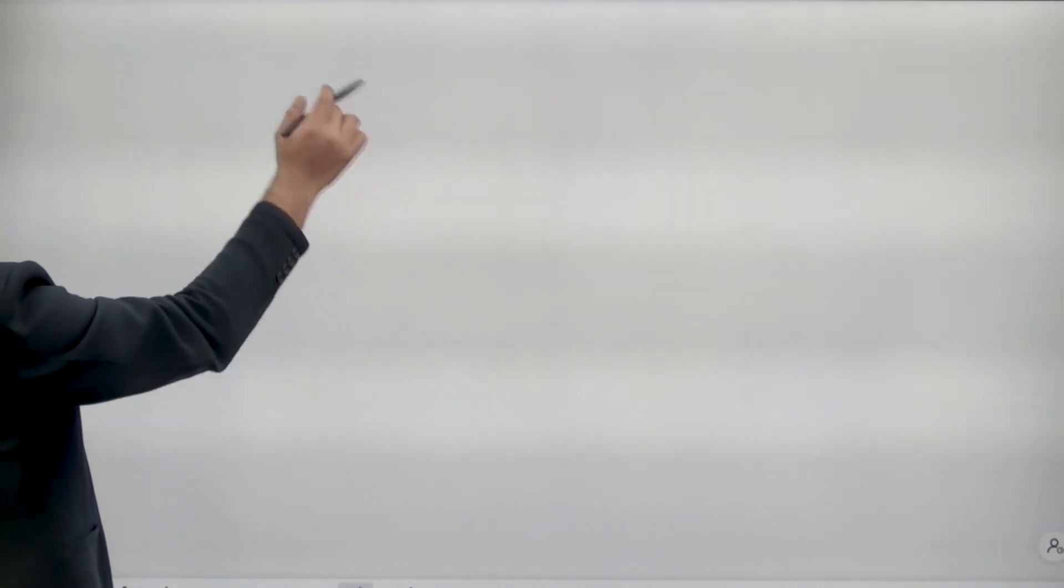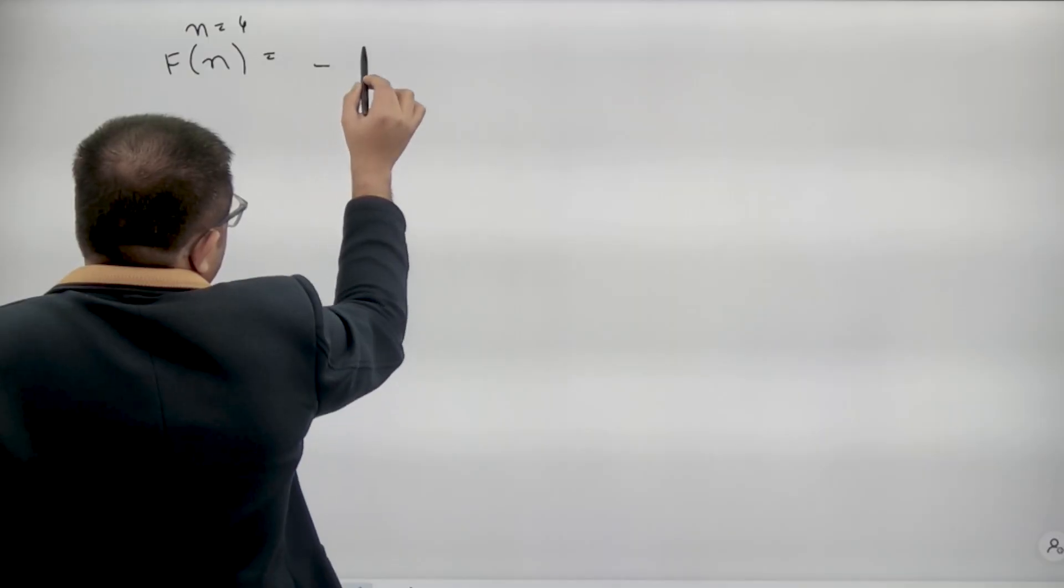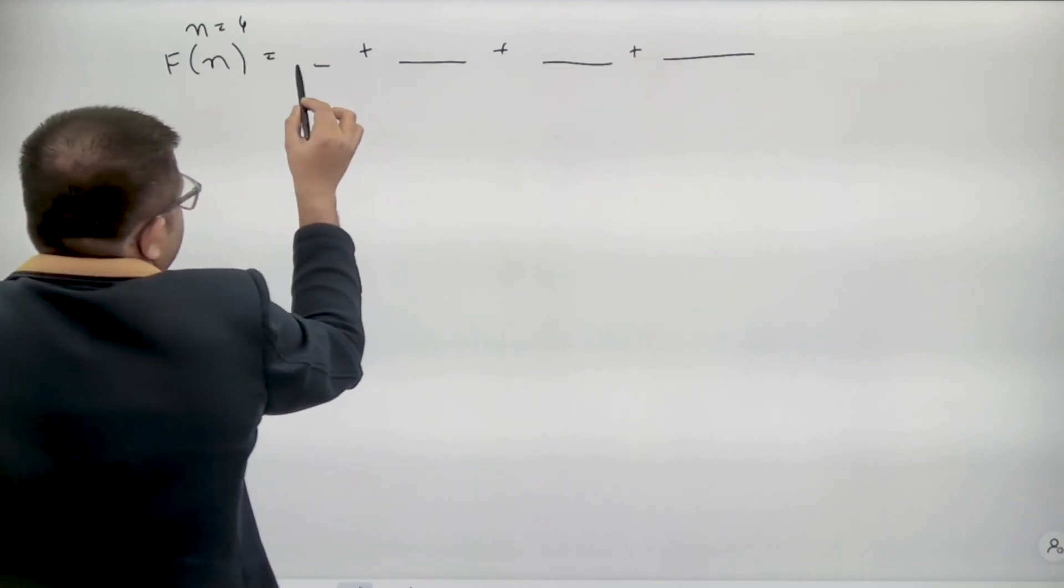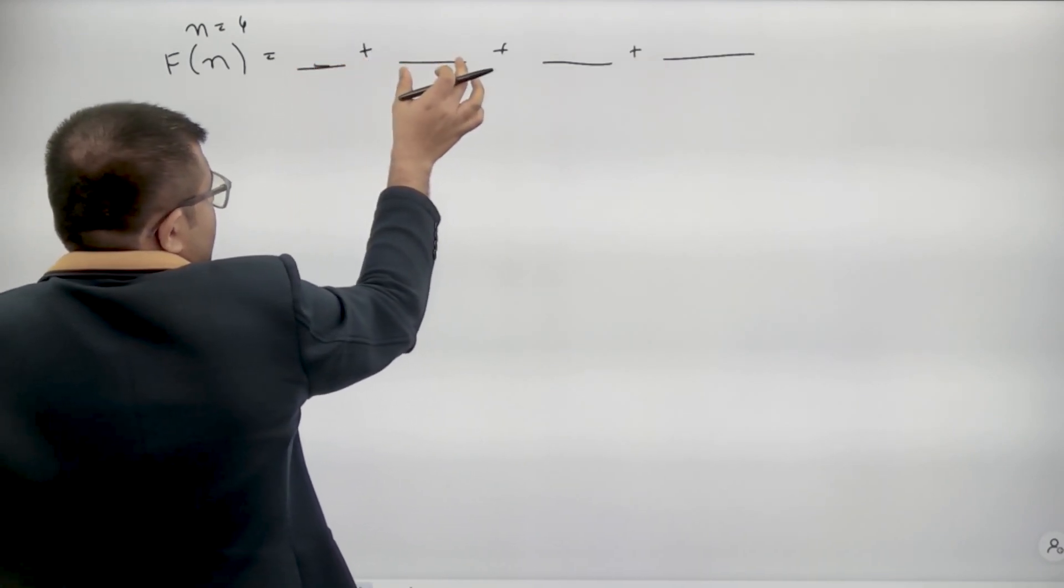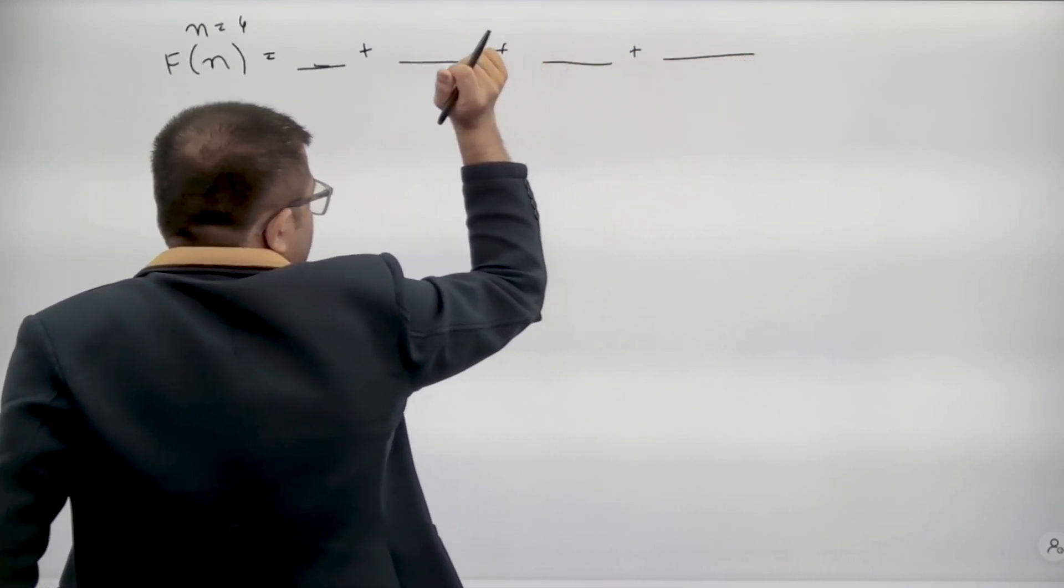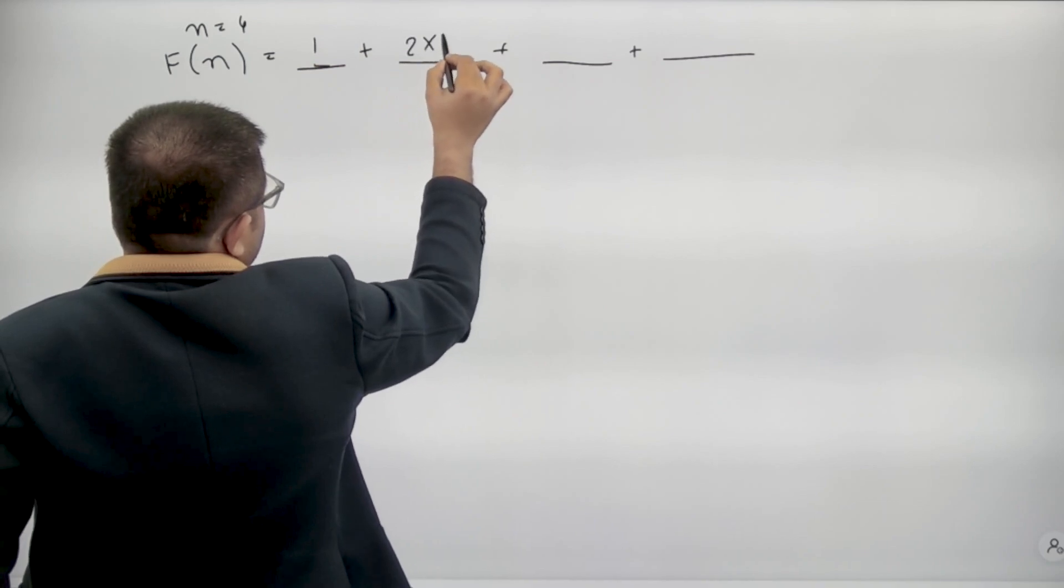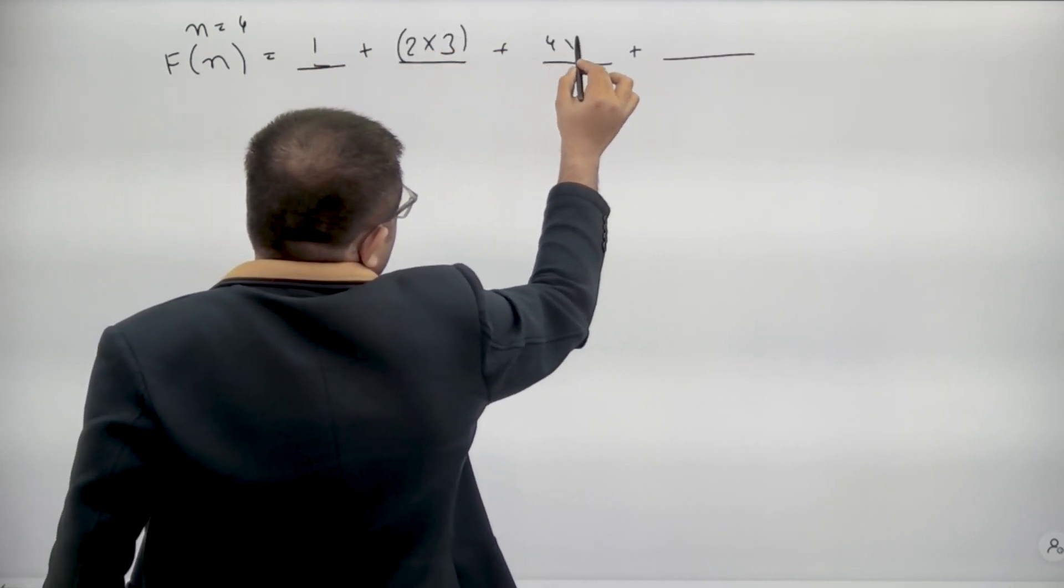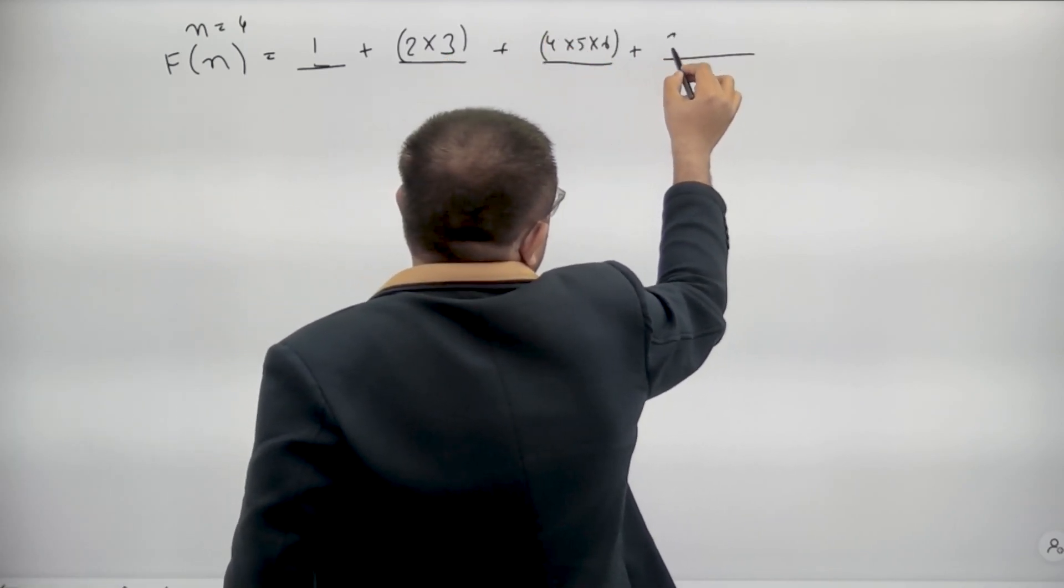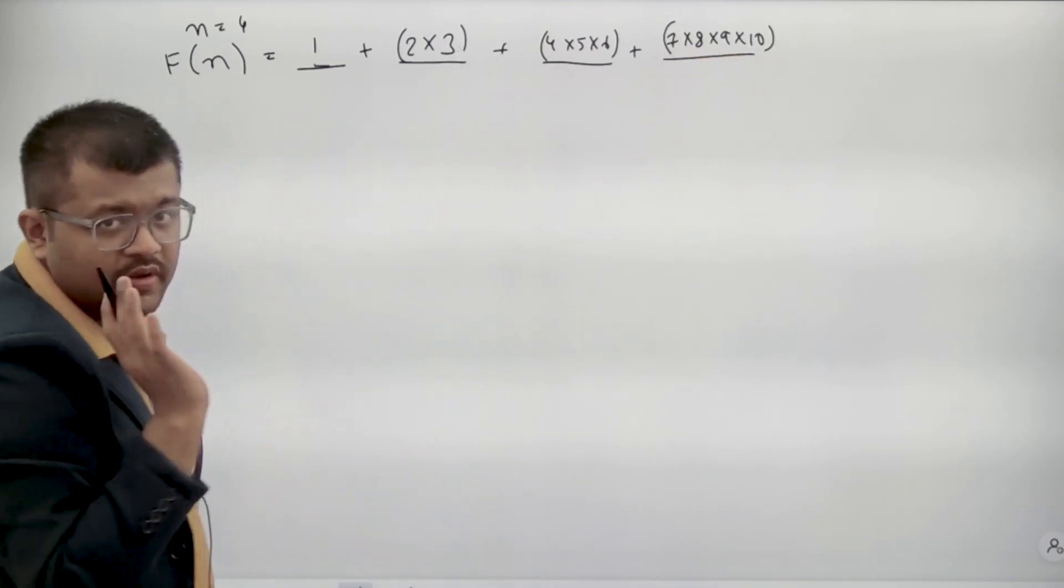Now if we think about solving this problem, then if we look at the problem carefully, for example, if f of n, if n equals to 4 is given, then what is f of n? It will contain sum of 4 elements. The first element will contain the product of 1 element. The second element will contain product of 2 elements. Third element will contain product of 3 elements. Fourth element will contain product of 4 elements.